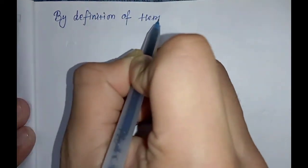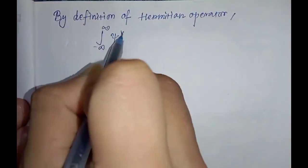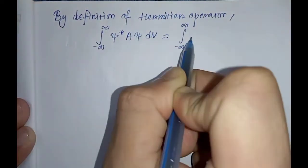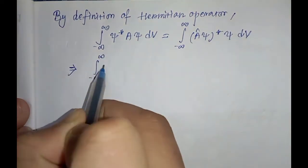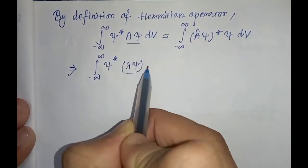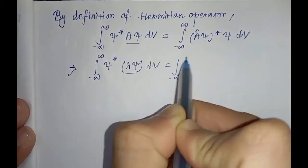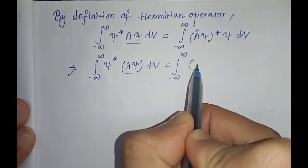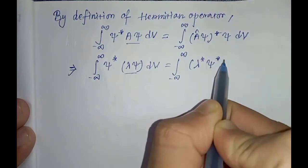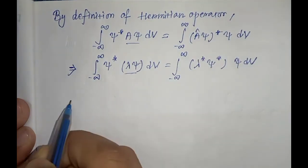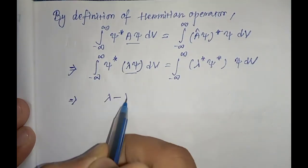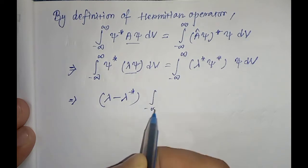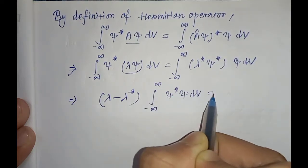Now let's write the definition of the Hermitian operator and substitute the values Aψ = λψ and (Aψ)* = λ*ψ*. In the next step we get: (λ − λ*) times the integration from minus infinity to infinity of ψ* ψ dV equals zero.